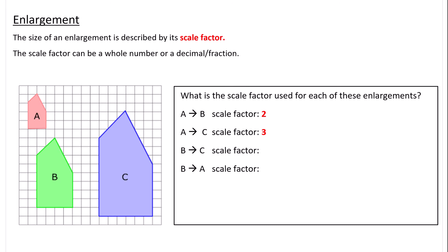What is the scale factor used for each of these enlargements? To go from shape A to shape B, I need to compare one of the sides. I'm going to compare the base. The base in A is 2, the base in B is 4 squares. So to get from A to B, I multiply it by 2. The scale factor is 2. To get from A to C, I'm going to compare the base again.